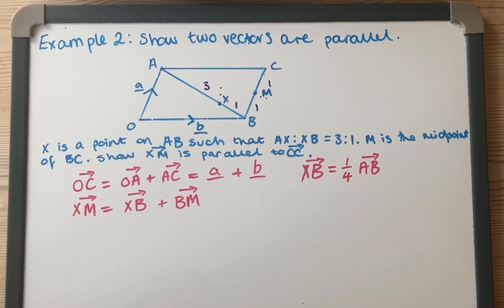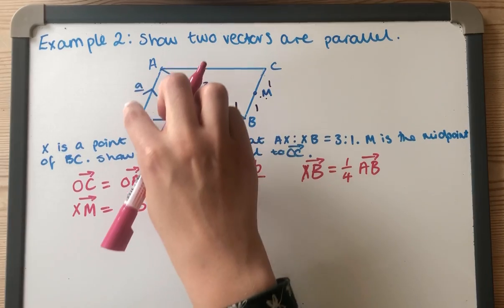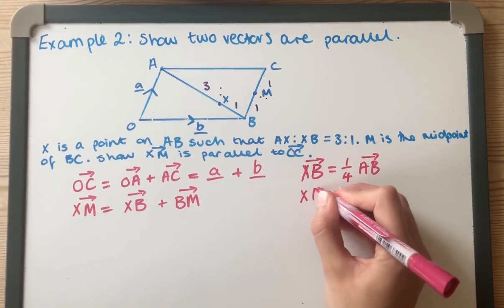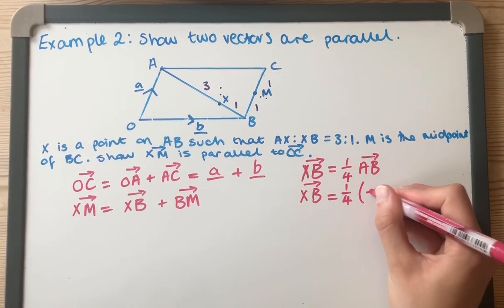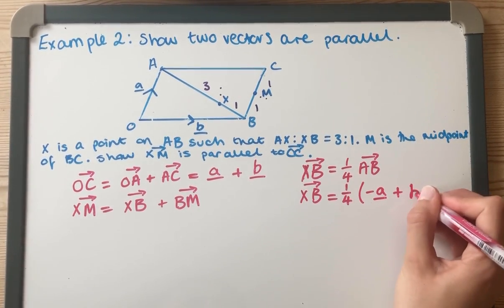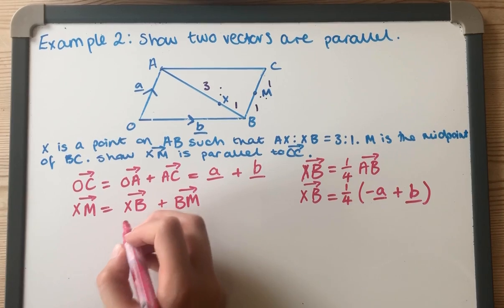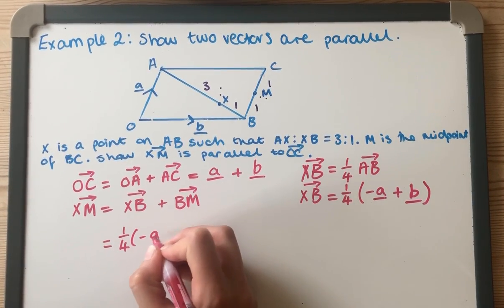We can see very quickly that A to B is minus A plus B. So that means that X to B is one quarter of minus A plus B. So I'm just going to write that in there - that bit's one quarter of minus A plus B.